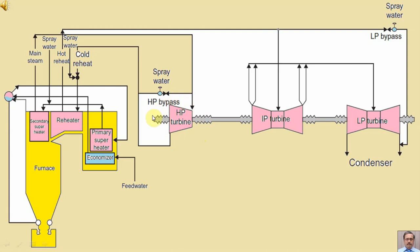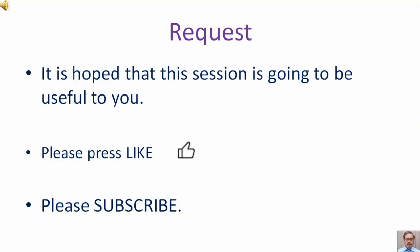Similarly, LP bypass is connected between hot reheat and the low pressure turbine exhaust. That means LP bypass is bypassing IP turbine, intermediate pressure turbine, and low pressure turbine.